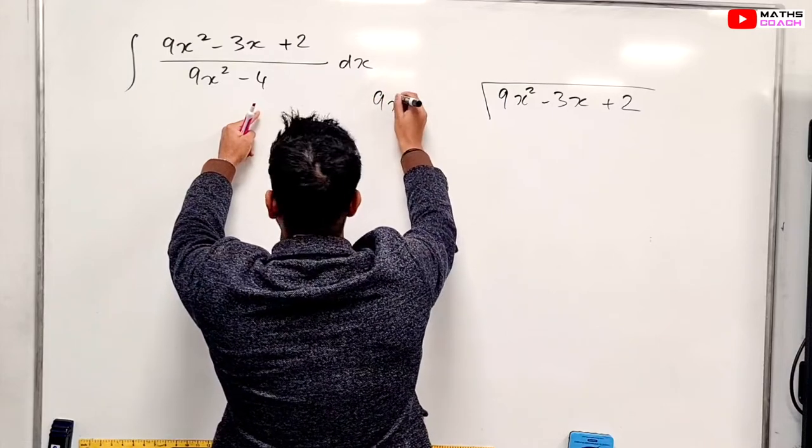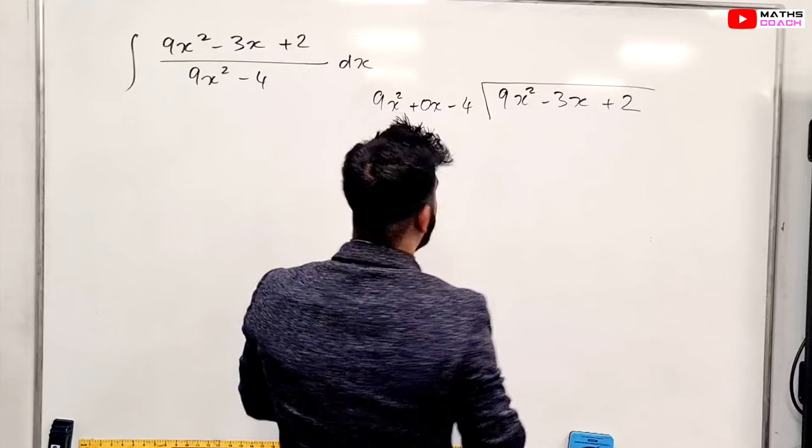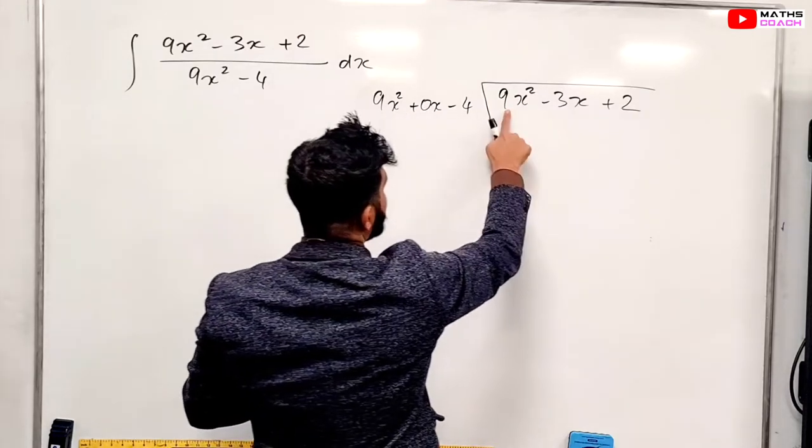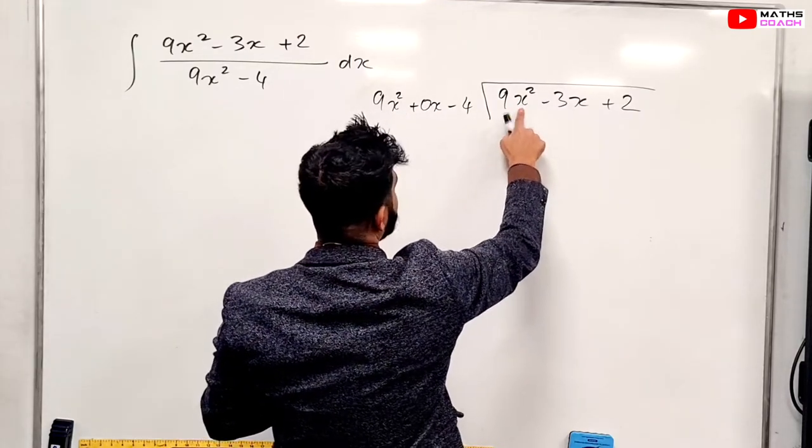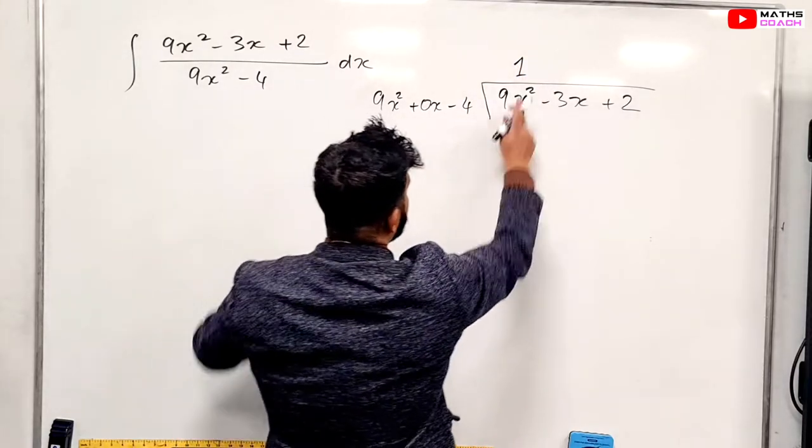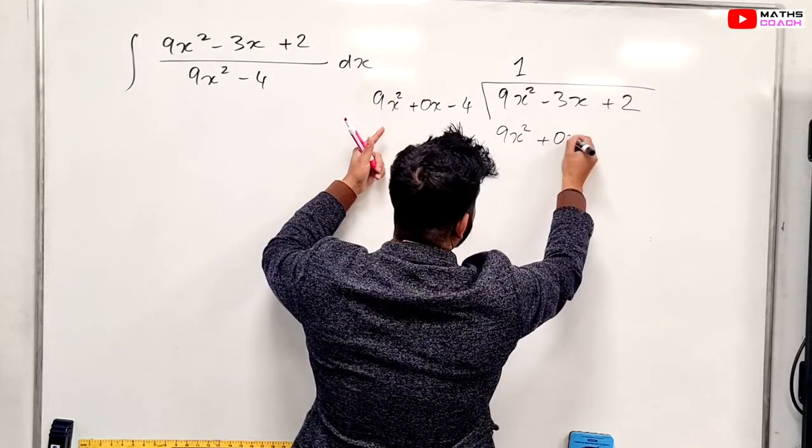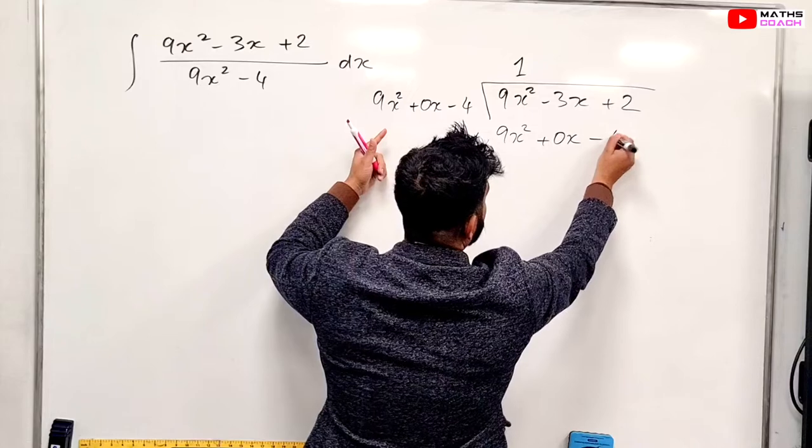Now we're going to do 9x squared plus 0x to fill in that gap and then minus 4. So 9x squared into 9x squared, how many times? Just once. Multiply out, we get 1 times all of that, so therefore 9x squared plus 0x minus 4.